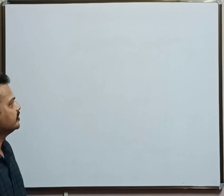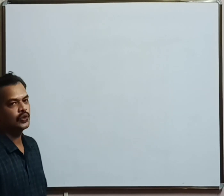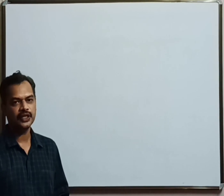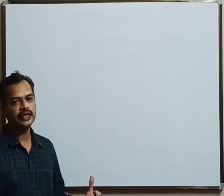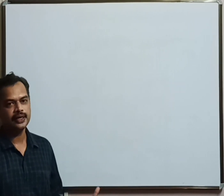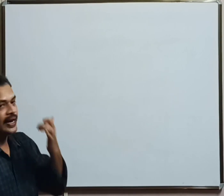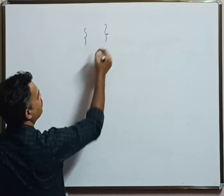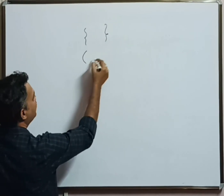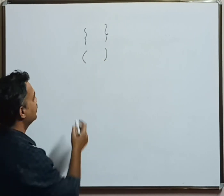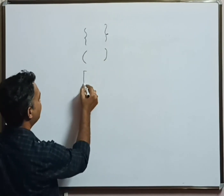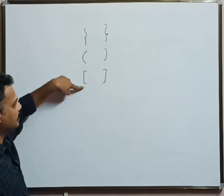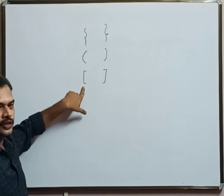Now let us design a CFG to accept balanced parentheses. Before we proceed into the designing part, we will have to go through parentheses. Parentheses can be flower brackets, small brackets, or square brackets.